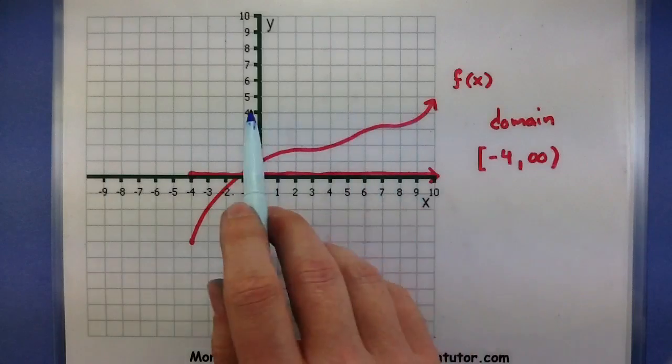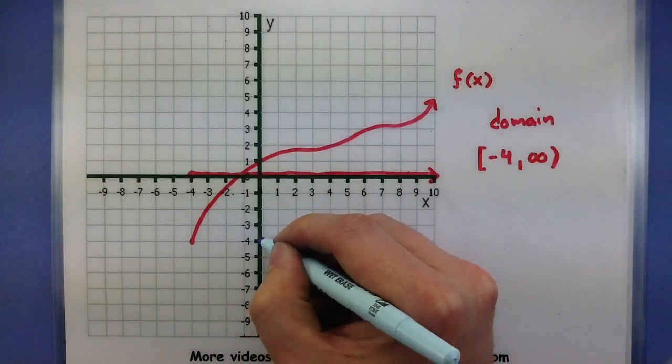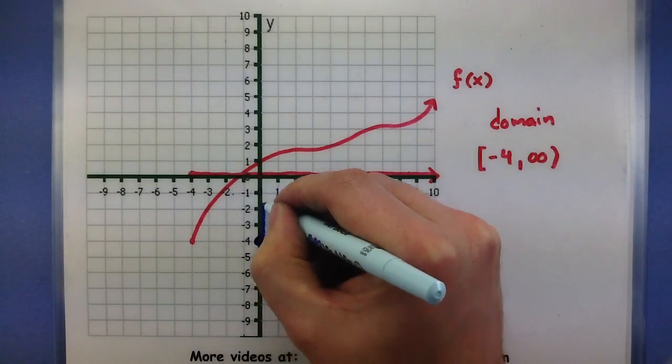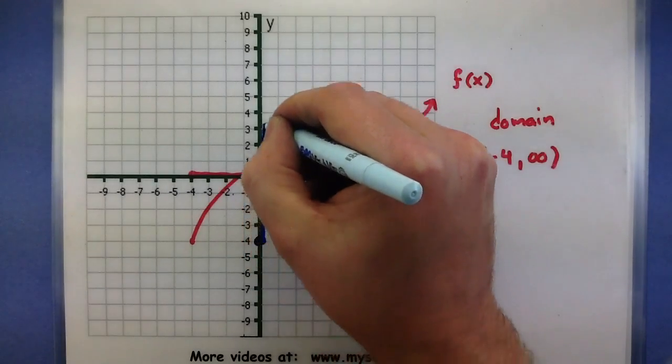Range, let's take these back to the y-axis. Looks like we'd start at maybe negative 4, shade in everything above that.